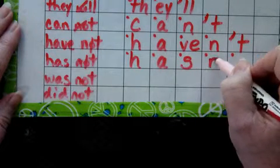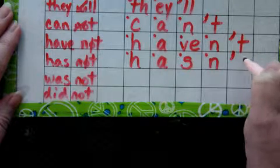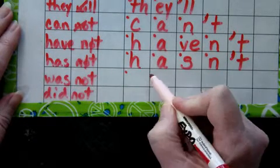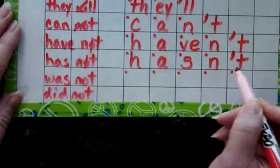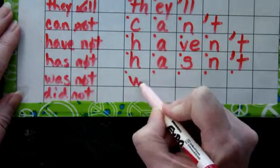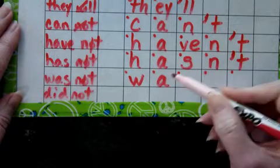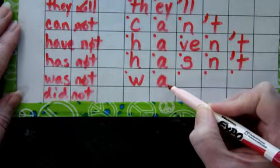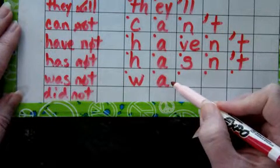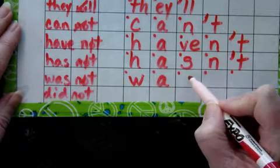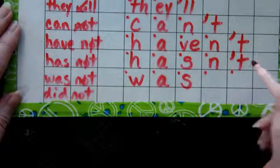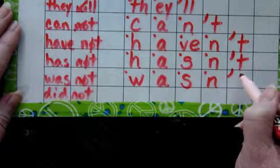The next pair is 'was' and 'not' — wasn't. I'm not quite sure why the A in this word says 'uh,' but it is spelled W-A-S. There's that Z sound again, but it's represented with the S: wasn't.